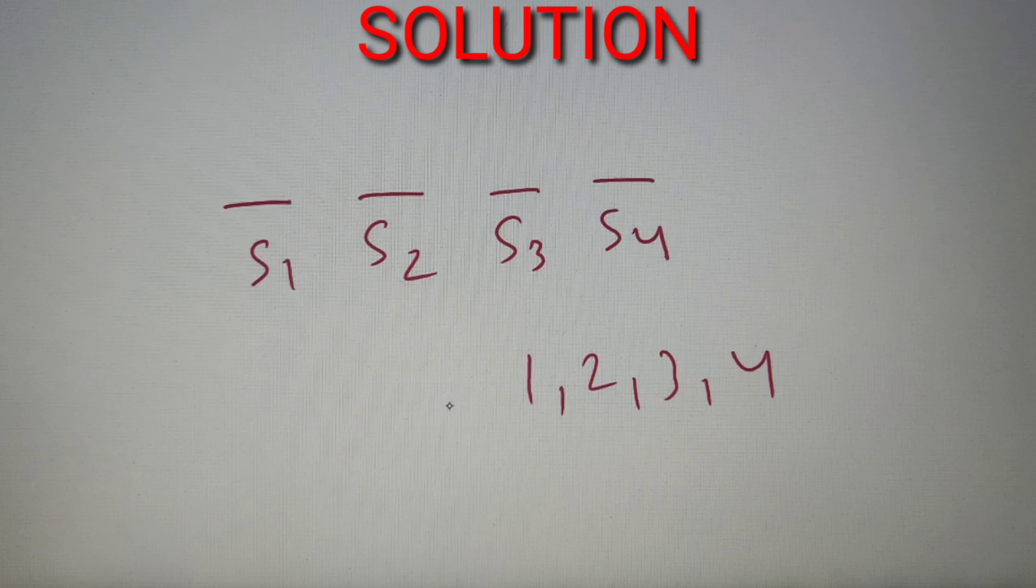Now in such questions of permutation and combination, what we have to do is make separate cases and then calculate the sum of all those cases. So let's make all the cases one by one.